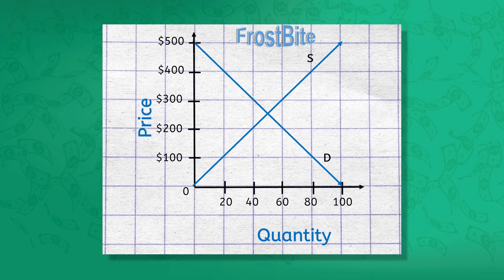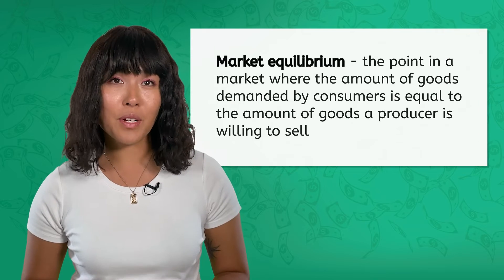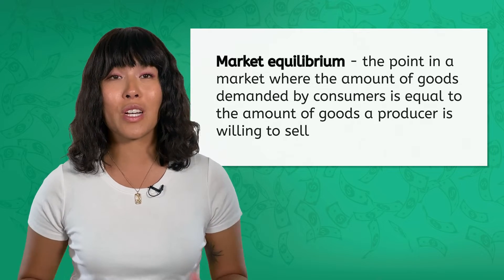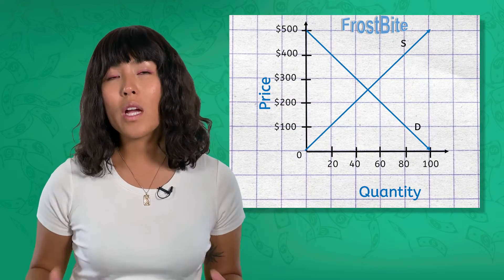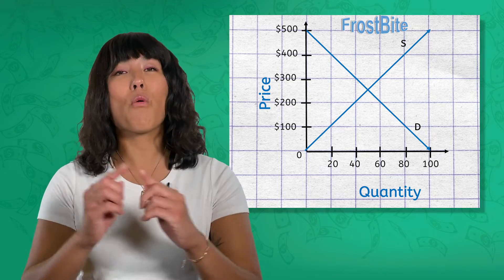So, how do they set a price? What would maximize the benefit for both the consumer and the producer? Let's put these two points of view together. When you put the supply and demand curves together, where would you predict the price would naturally be set? If you guessed that it would be the point at which the two curves intersect, you'd be right. This magic price is called market equilibrium. So, where will Frostbite likely set the price for their new 3.0 console? That's right — at the point of equilibrium.